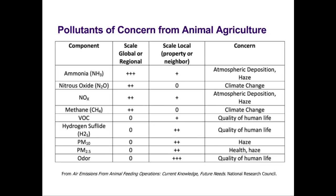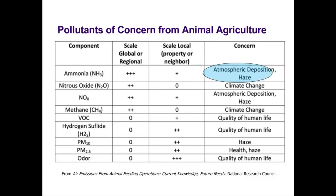First, it's important to understand how air quality concerns are weighed in public discourse. Some air pollutants are considered global or regional issues, while others dominate local concerns. For example, ammonia emitted from livestock operations is primarily a regional concern, because it may contribute to atmospheric haze and impact the landscape as it falls to earth, causing soils to become more acidic.